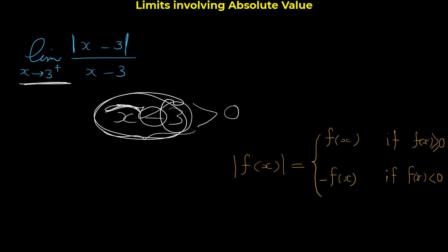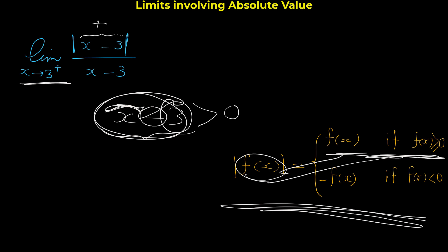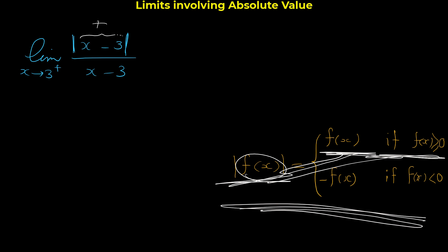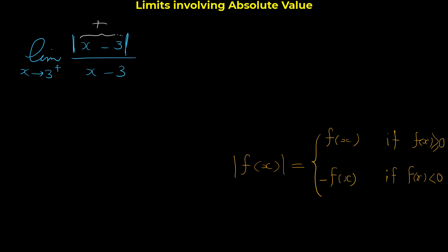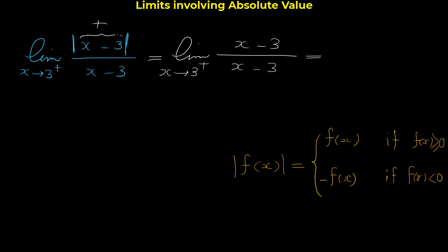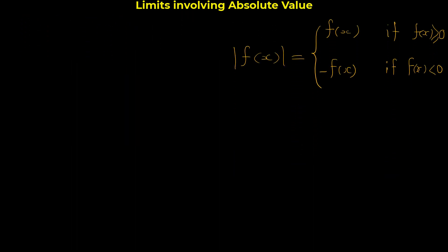Since the expression inside the absolute is positive, we apply the rule: |f(x)| = f(x). So we write limit of (x-3)/(x-3) as x approaches 3 from the right. The (x-3) in the numerator and denominator cancel each other, and the limit equals 1.